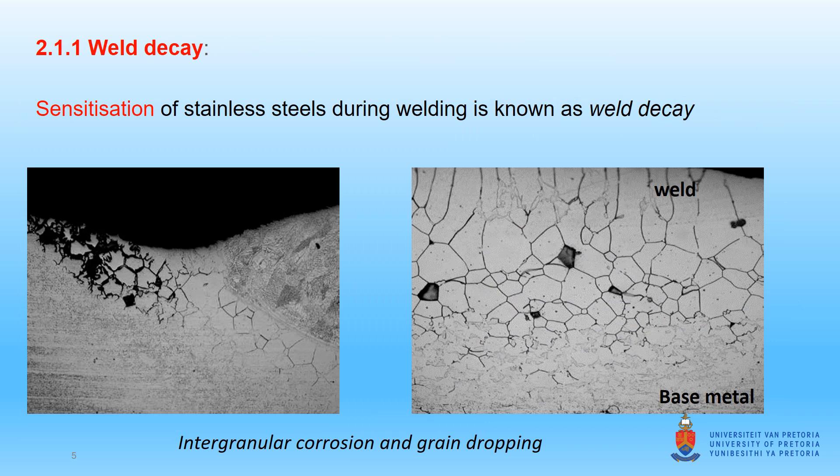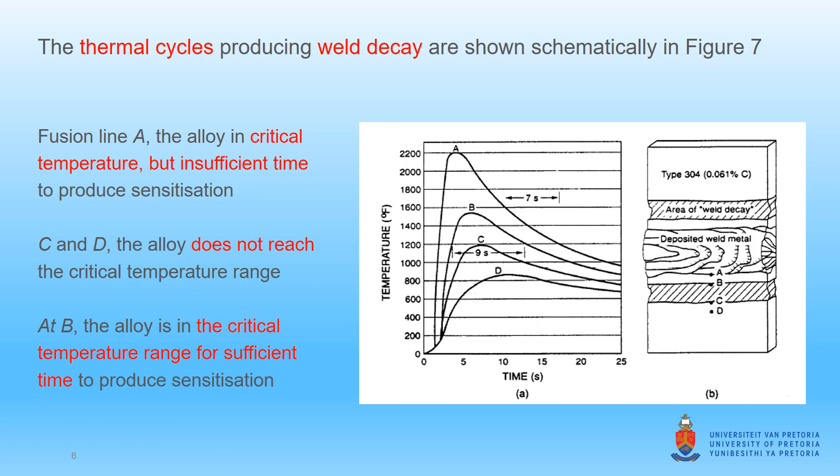Solution annealing can desensitize stainless steel, but it is often not possible to perform heat treatments in welds. Sensitization of stainless steel during welding is known as weld decay. The typical weld decay is shown in these two microstructures, where sensitization has resulted in intergranular corrosion within the heat affected zone. Figure 7 shows schematically the thermal cycle temperatures that can produce weld decay in the heat affected zone. In the fusion line, which experiences thermal cycle A, the alloy is in the critical temperature range for insufficient time to produce sensitization. In regions C and D, the alloy does not reach the critical temperature range. At B, the alloy region is in the critical temperature range for sufficient time to produce sensitization and susceptibility to weld decay.